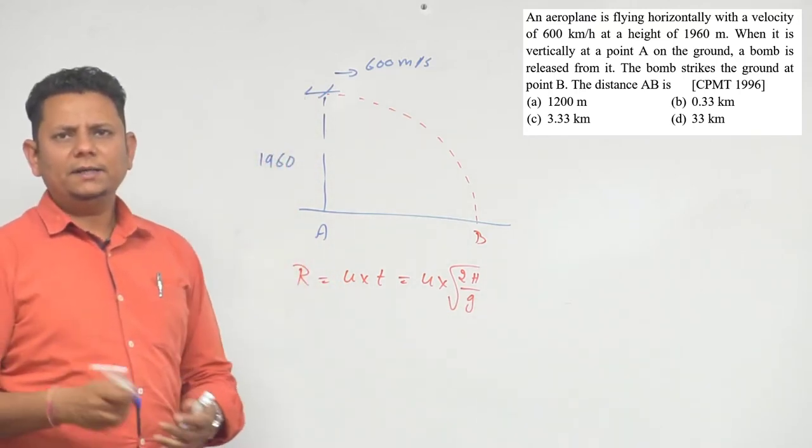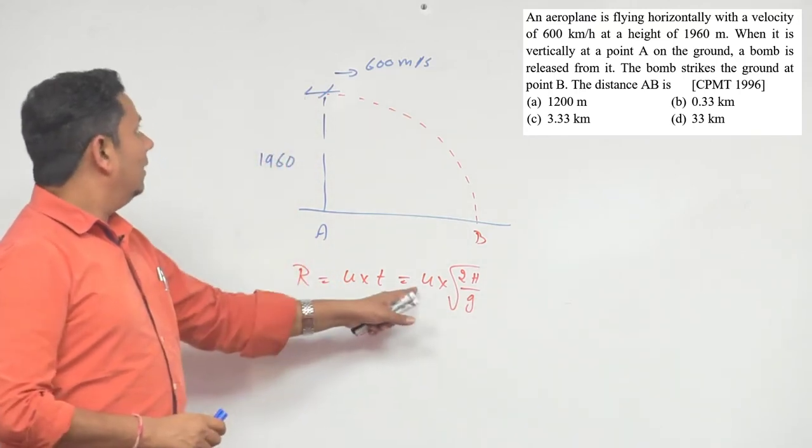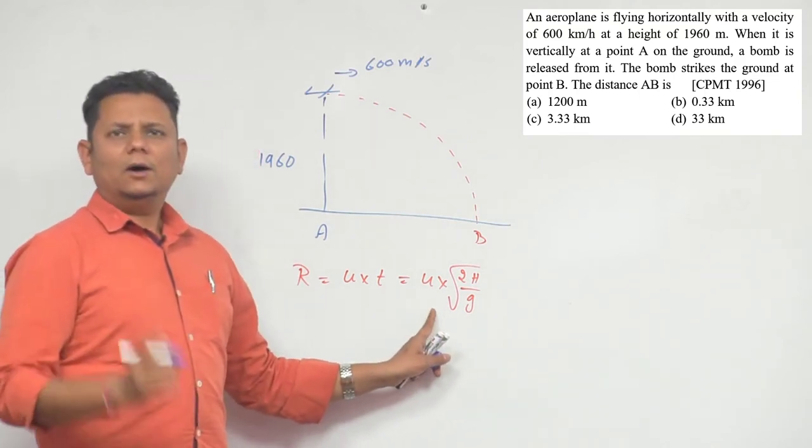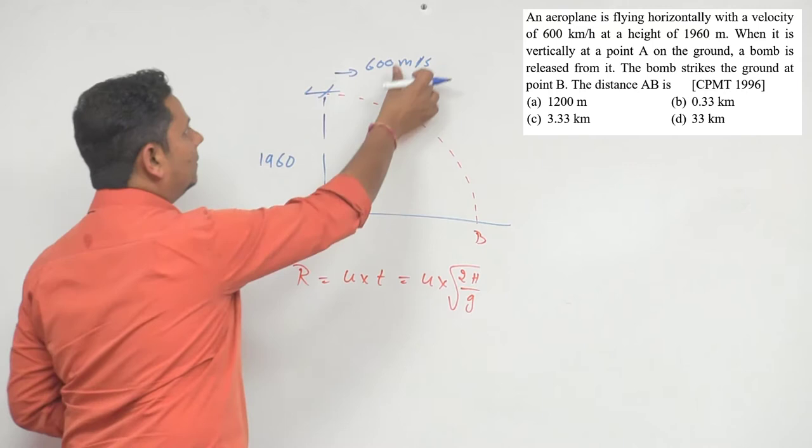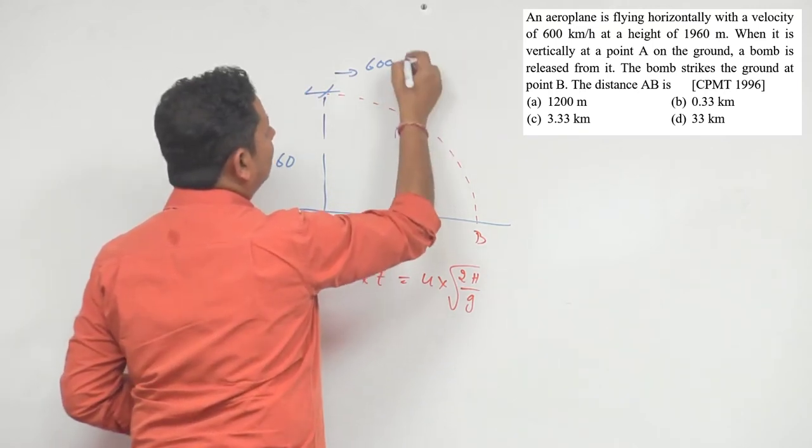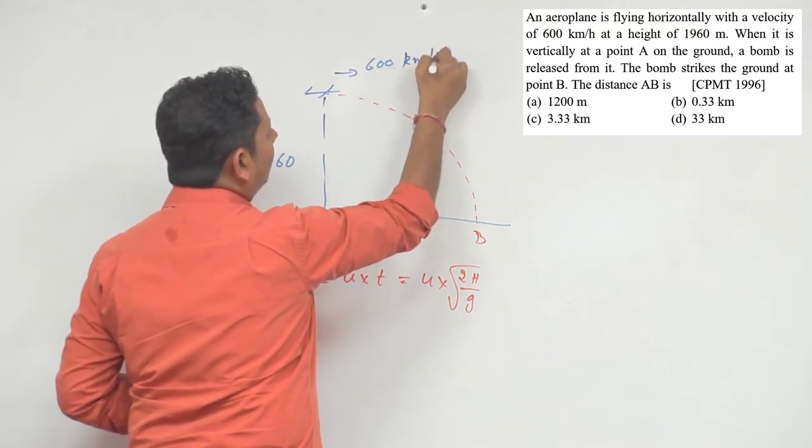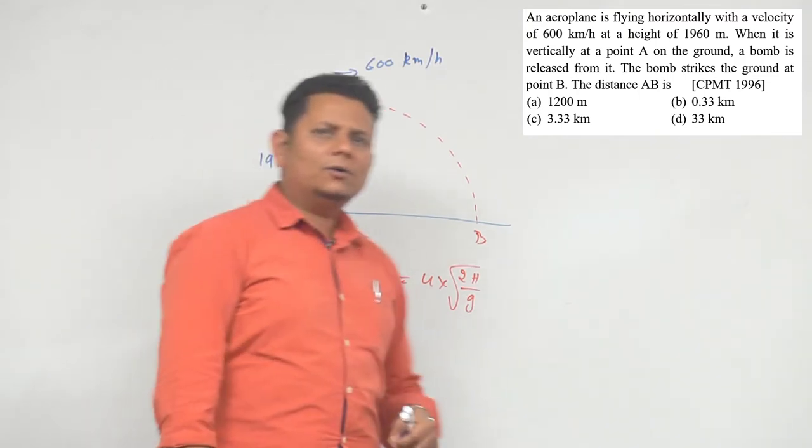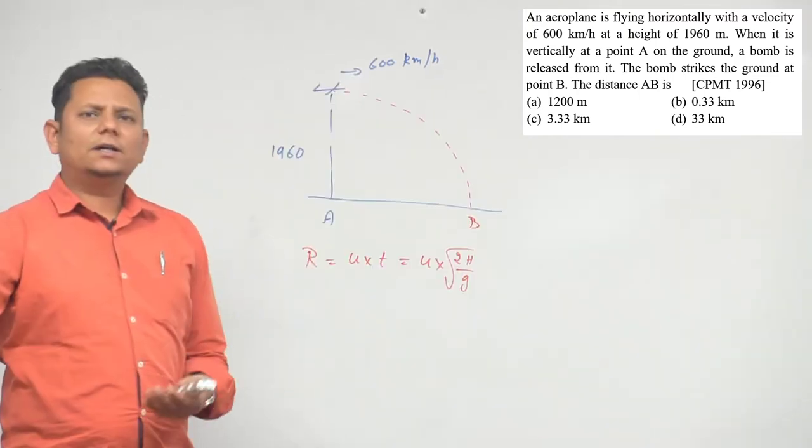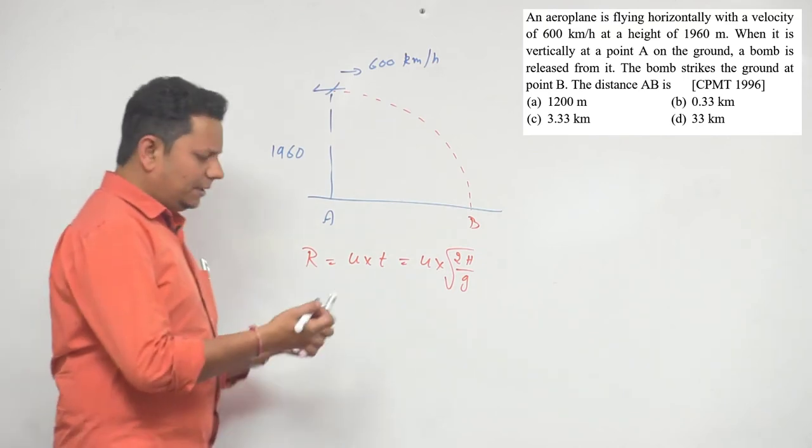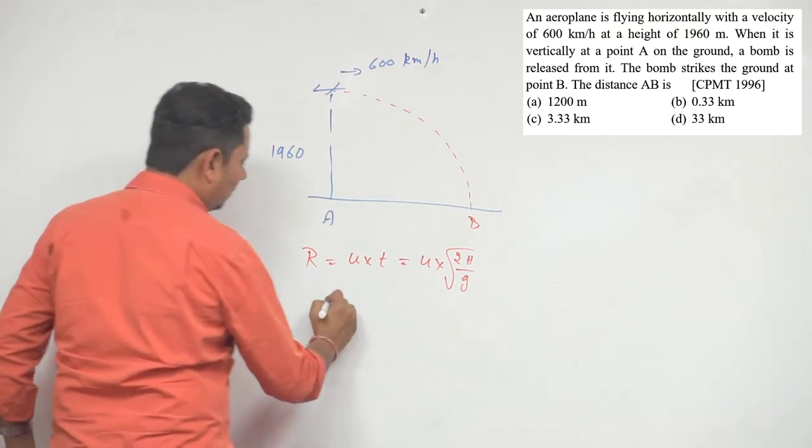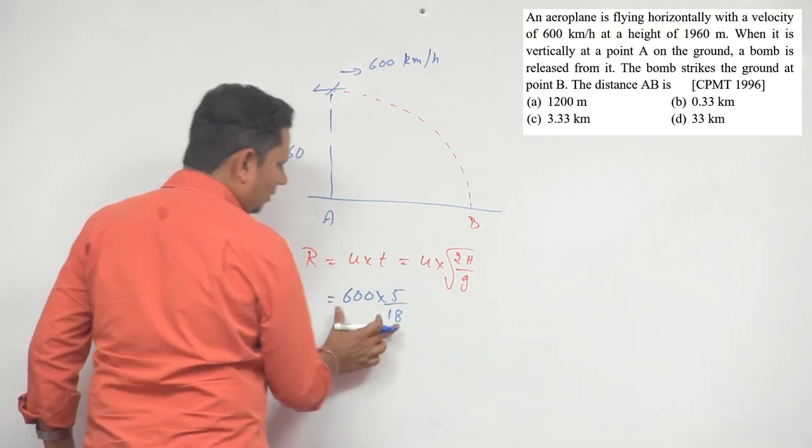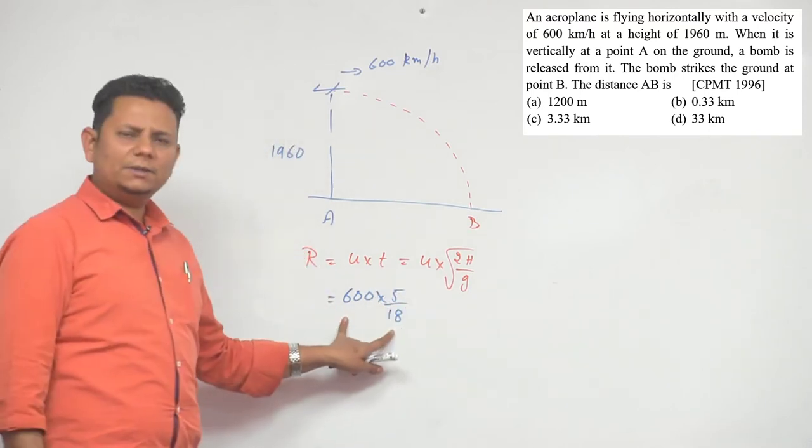In this we just need to put the values from the data. There is one thing we need to notice. This speed is 600 kilometer per hour, not 600 meter per second. We need to convert this kilometer per hour. So we'll do 600 multiplied by 5 by 18. Now this will be in meter per second.